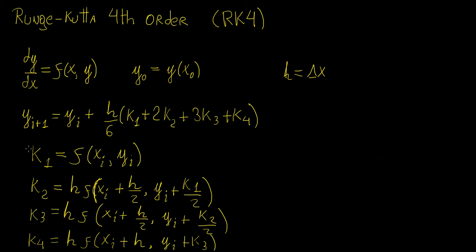We grab k1 — that's the first coefficient we calculate. We put in the values of x_i and y_i into the function, which is whatever expression we have for the first derivative, and calculate k1. Then we calculate k2 using the same function, but now with x_i plus h/2 and y_i plus k1/2. We need k1 to calculate k2. Then the same sequence repeats for k3, and then for k4.